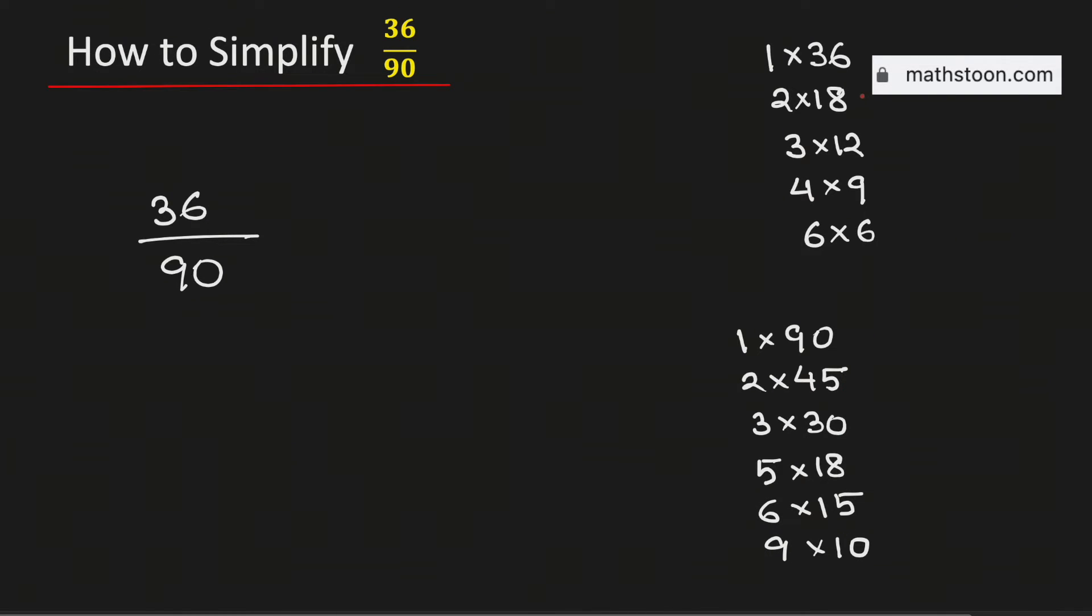Among these numbers, see that 18 is the greatest one which is present in both these two lists. Therefore, 18 is the greatest common factor of 36 and 90.